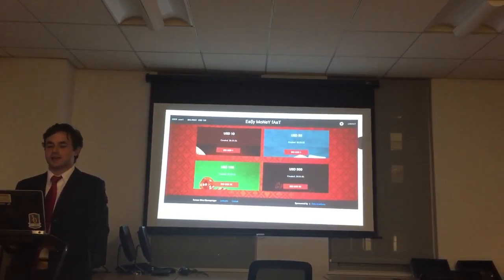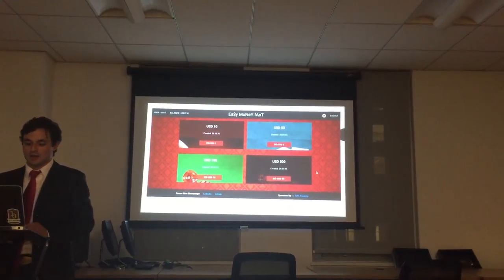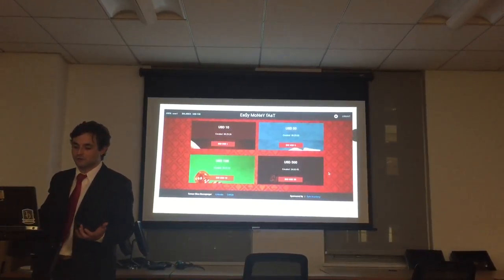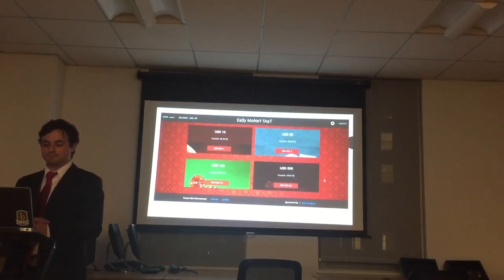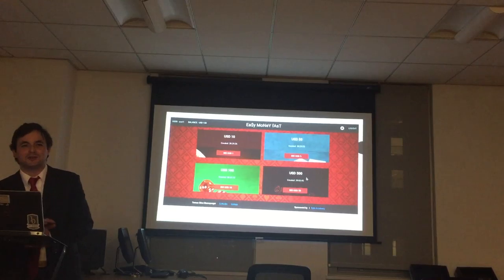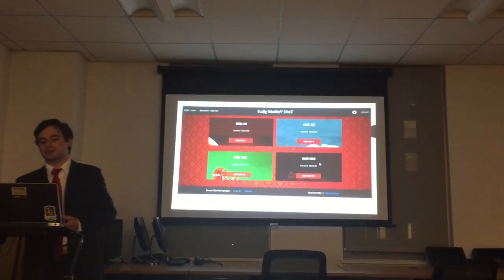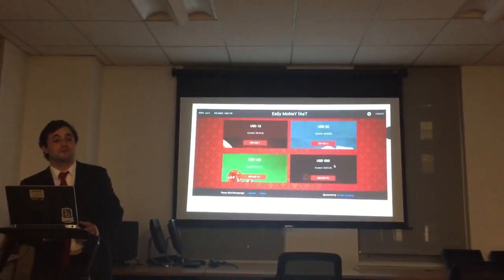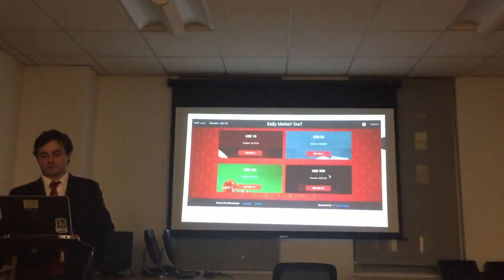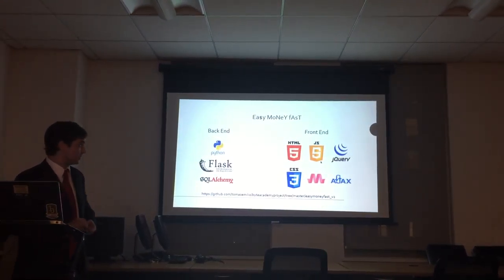That's the entire idea of the game. We have $10, $50, $100, and $500 pools. I also created a roulette — just because this is a game, possibly a real money-making machine in the future. You can only play every 24 hours. If you run out of money, don't worry: Easy Money Fast will credit your balance with a random number from $10 to $10,000.